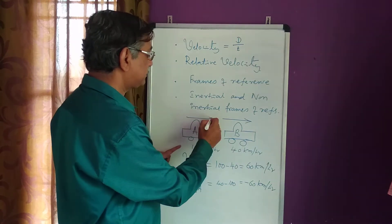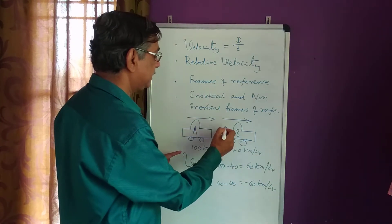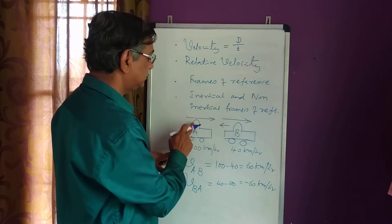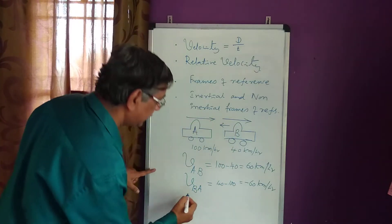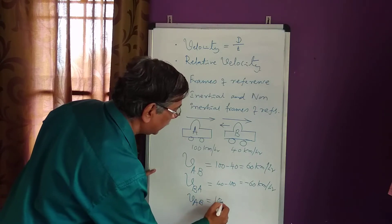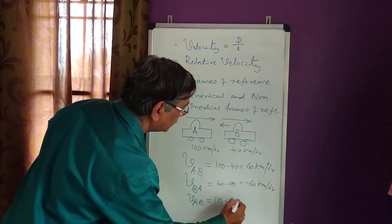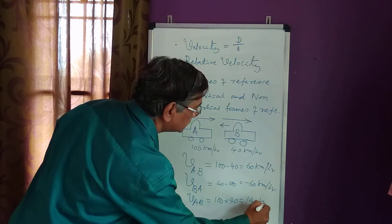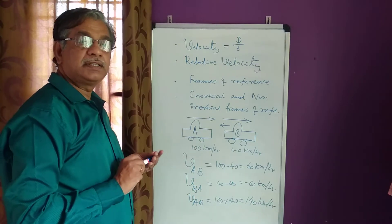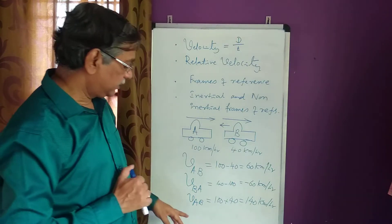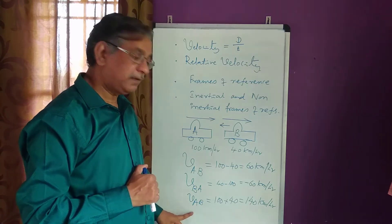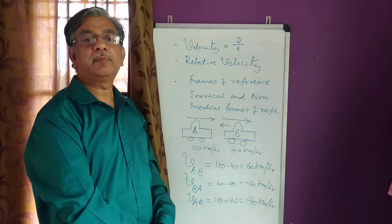Now, if the direction of this vehicle and the direction of that vehicle are opposite to each other, then the relative velocity of A with respect to B will be equal to 100 plus 40, that is 140 kilometers per hour. And the relative velocity of B with respect to A will also be the same, 140 kilometers per hour.